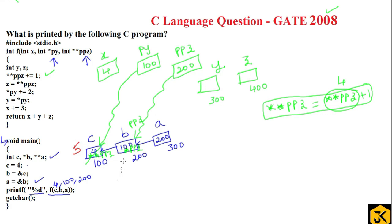Next, `z = **ppz`: **ppz is again 5 (since ppz=200 → star gives 100 → one more star gives the value inside c, which is now 5). So the value of z is copied as 5. Then, `*py += 2` is rewritten as `*py = *py + 2`. py is 100, so *py dereferences to c's location.